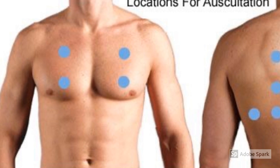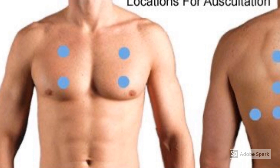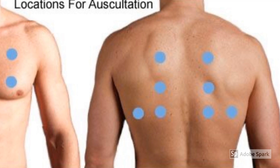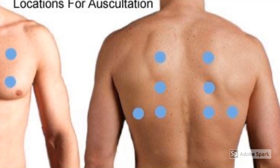You want to take a listen to each breath sound for at least two cycles so that you can identify what lung sounds you may hear. It is also important to make sure that you listen to the posterior thorax to be able to listen to breath sounds.